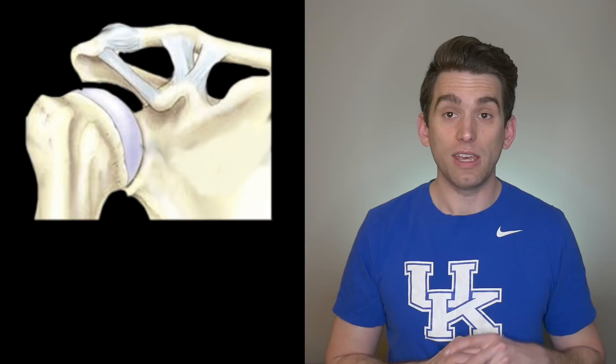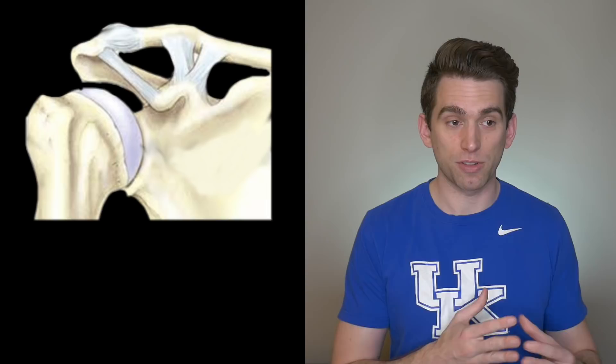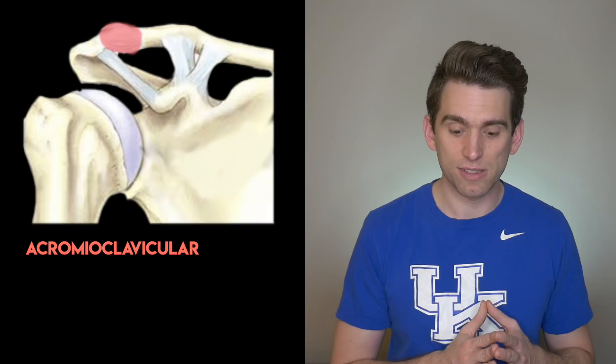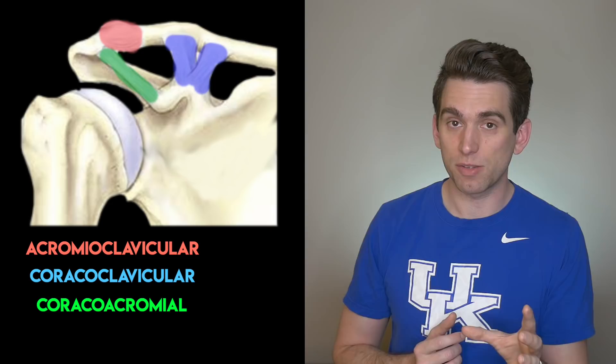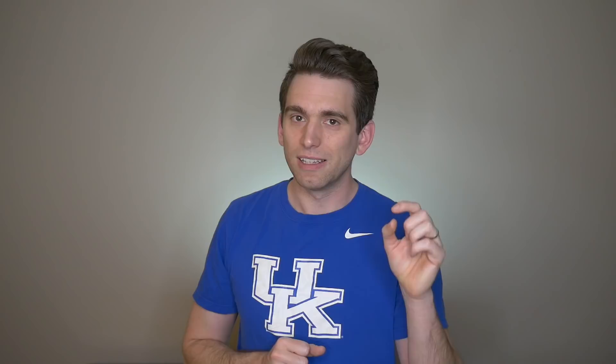If we zoom in closer on the AC joint, we can see that it's made up of a number of different ligaments that are all named after the two structures they connect. Between the acromion and the clavicle, we have the acromioclavicular ligaments. Then there's the coracoclavicular ligaments running between the coracoid process and the clavicle, and then the coracoacromial ligament running from the acromion to the coracoid process. So when you hear someone has a shoulder separation, it involves this complex of ligaments around the AC joint, not the actual glenohumeral joint.